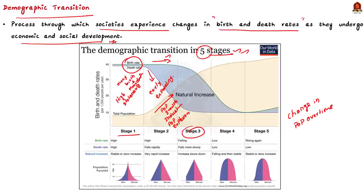Moving on to Stage 3, the late expanding stage. In this stage, birth rates start to decline due to factors like increased education, urbanization, and people's access to contraceptives. The economy becomes more industrialized and people start moving to cities for jobs. At the same time, death rates continue to decline, leading to slower population growth. India is currently in the third stage of demographic transition theory.